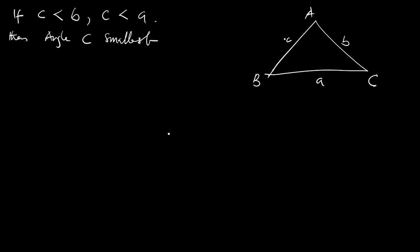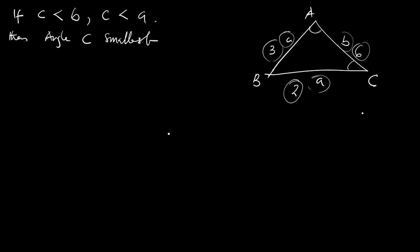That means if a side is the smallest, then its opposite angle will be the smallest. For example, if the sides are 3, 2, and 6, then since 2 is smaller than the others, angle A opposite that side will be the smallest angle.